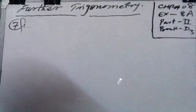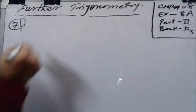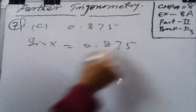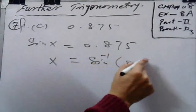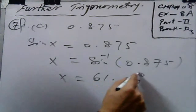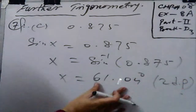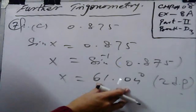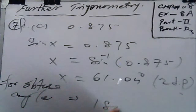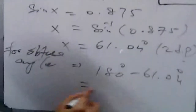Similarly, for part c with 0.875: sin x is equal to 0.875, so x is sin inverse 0.875. With the help of a calculator you get 61.04 degrees, up to 2 decimal places. 61 is less than 90, so it is an acute angle, but we need an obtuse angle. For obtuse, subtract from 180 to get 119.0 degrees, up to 1 decimal place. That is your required result.